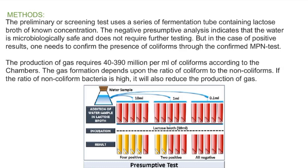The presumptive test is the preliminary test. It is used with a fermentation tube and we observe lactose growth. A negative result — no gas production — indicates safe water.